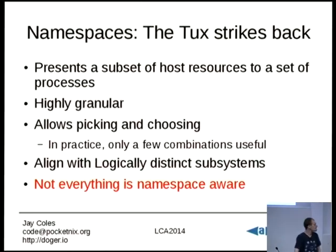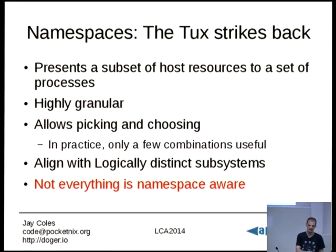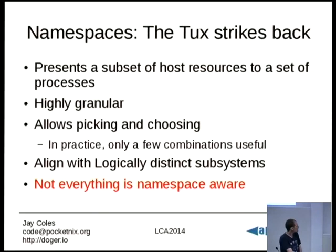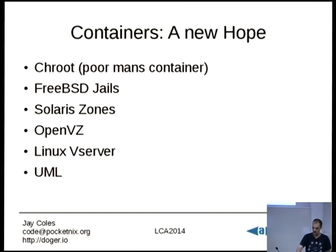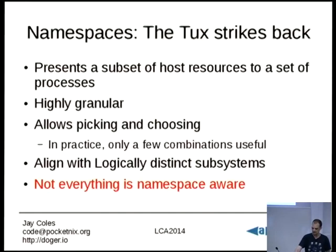So, namespaces. Probably the most succinct definition I could come up with: a namespace presents a subset of host resources to a set of processes. If you're familiar with Chroot, this should sound very familiar — it presents a limited view of the filesystem to the process and all its children. The interesting thing about namespaces is that they're highly granular. If you look at FreeBSD jails or anything else on that list apart from Chroot, they were very much all-or-nothing approaches, whereas namespaces allow you to just pick and choose the features you want. They're not tightly coupled together.